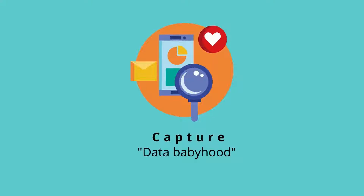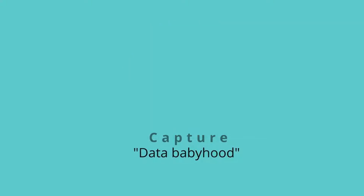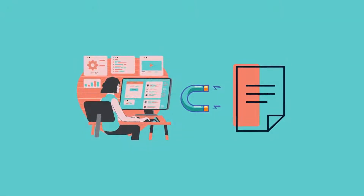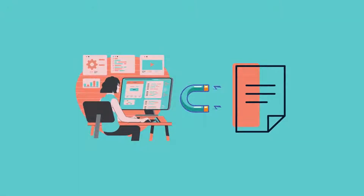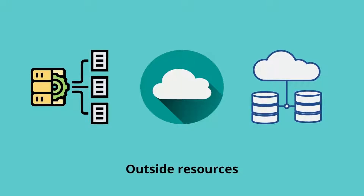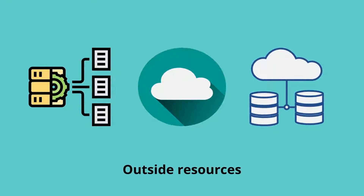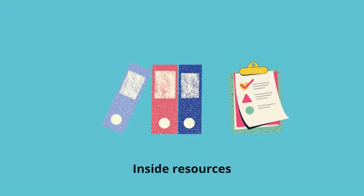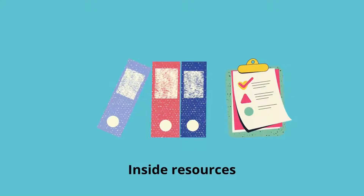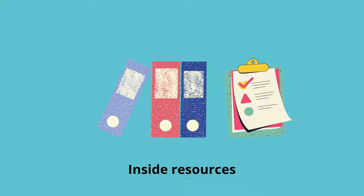After that, the next phase is to capture the data. This is where data is collected from a variety of different sources and brought into the organization. The ways to collect it are truly endless. One common method is getting data from outside resources, using a publicly available dataset, or getting it from an inside resource such as the agency's own documents and files, which are usually stored inside a database. We can refer to this phase as the data babyhood.